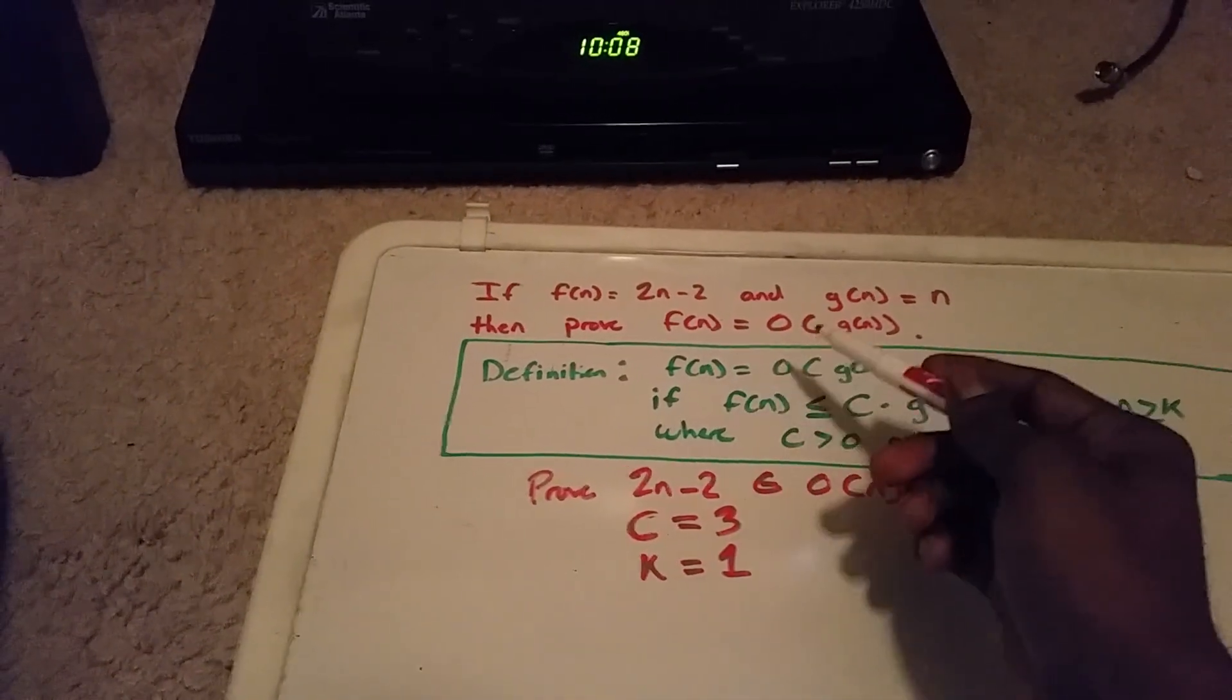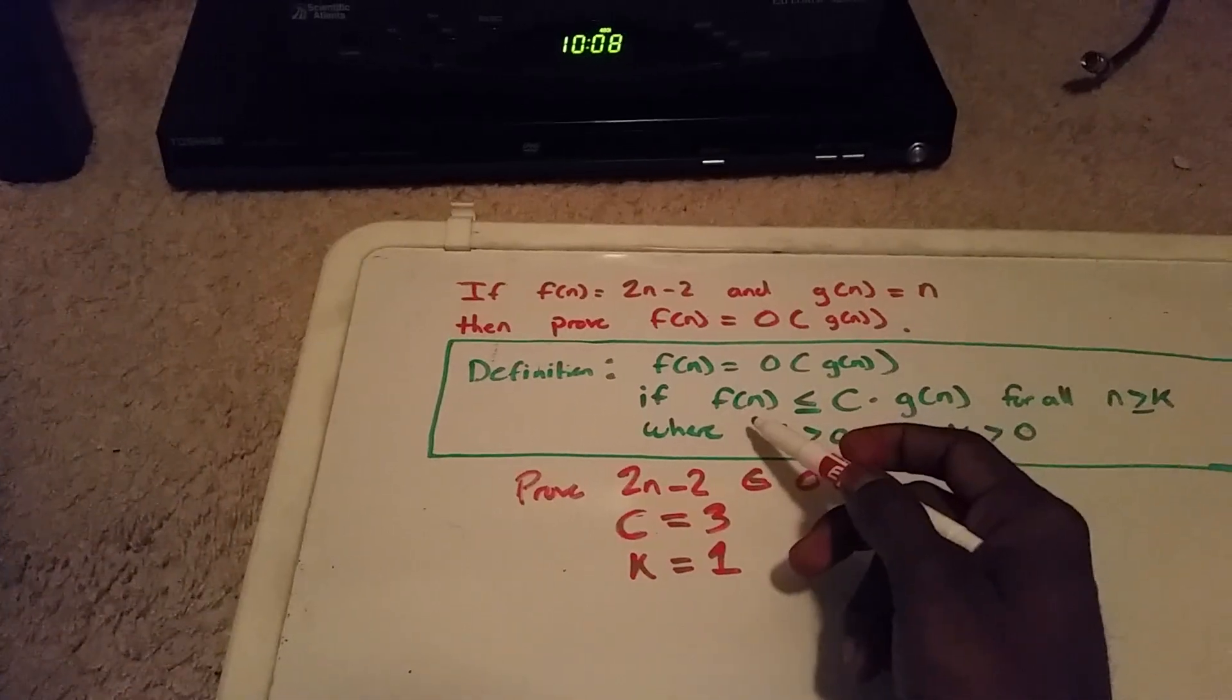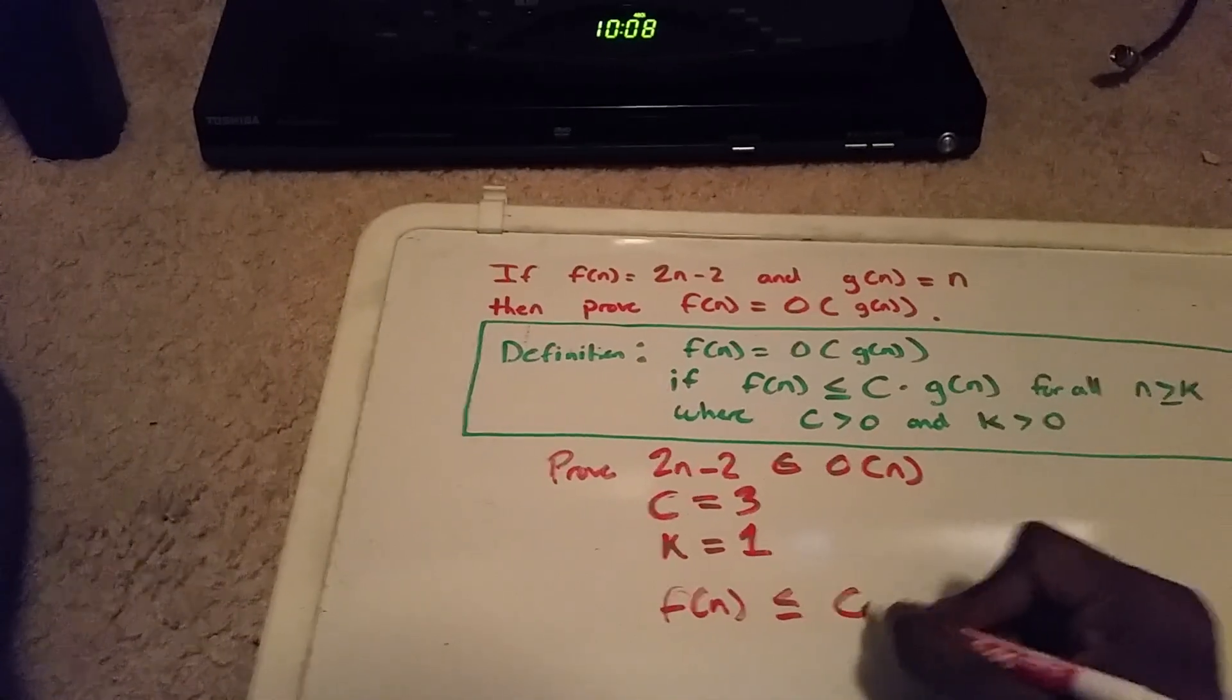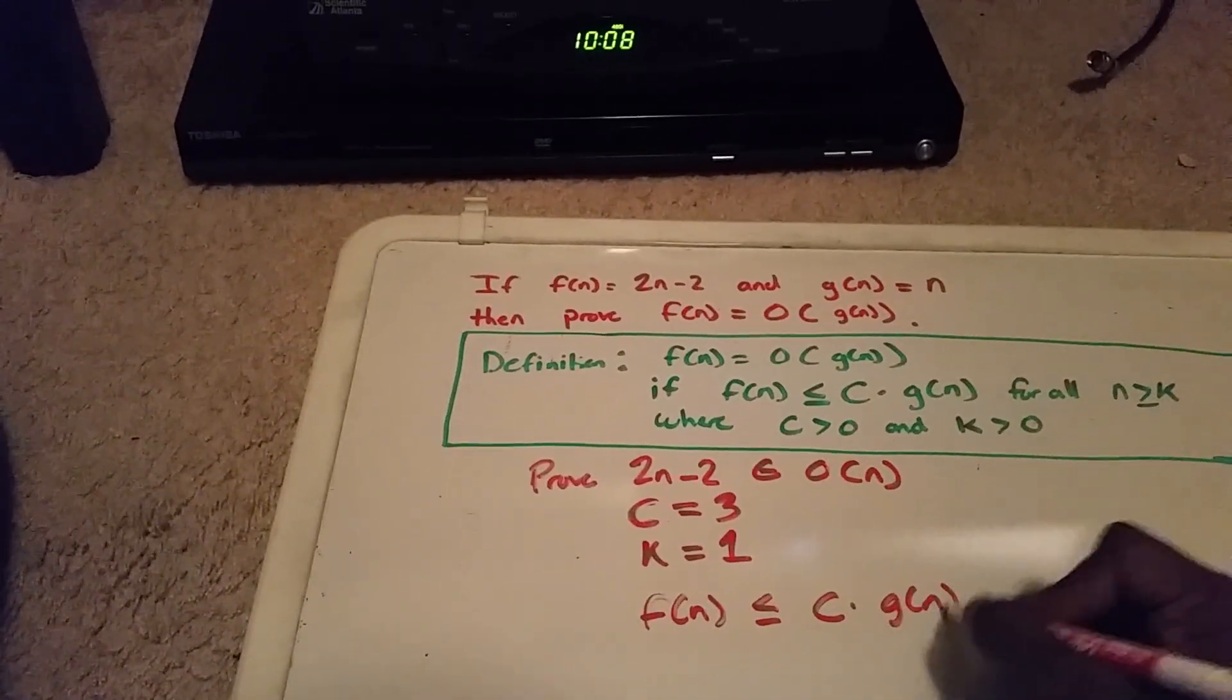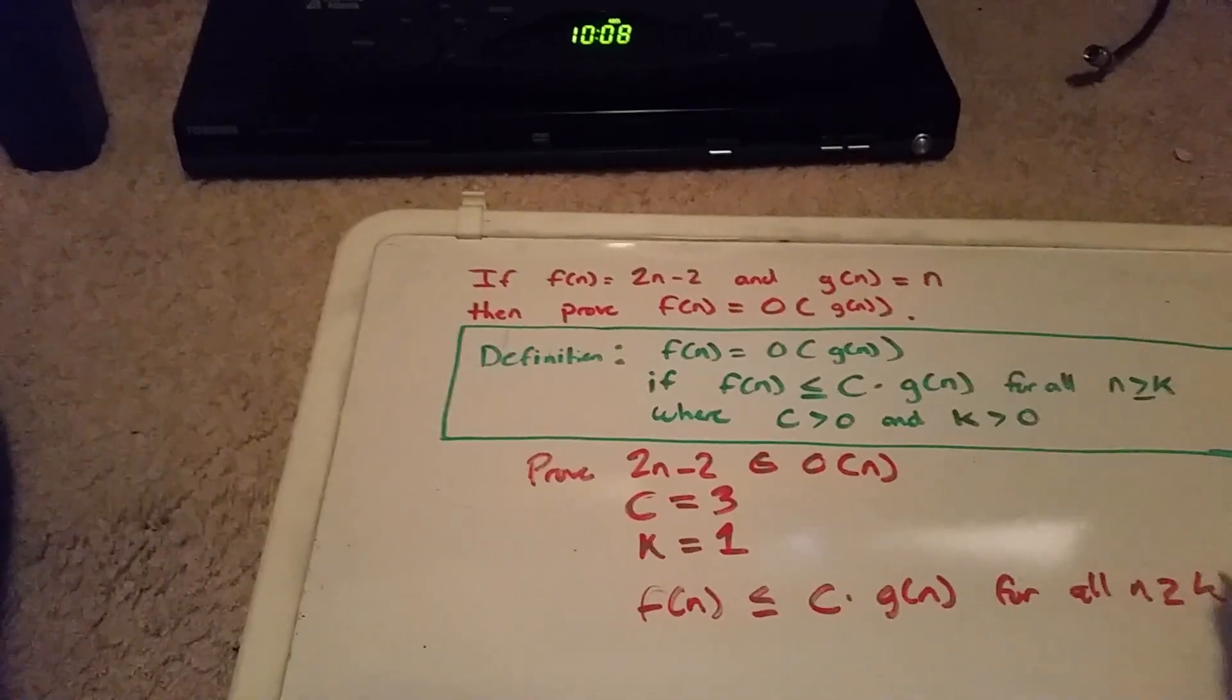Now we'll use this definition to prove this. We have f(n) less than or equal to c times g(n) for all n greater than or equal to k.